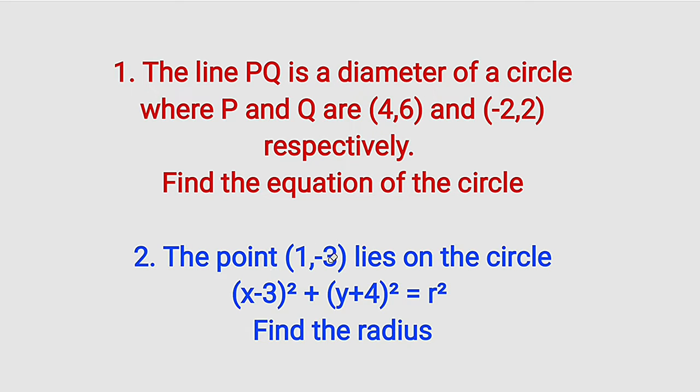While the second question reads, the point (1,-3) lies on the circle that has the equation (x-3)² + (y+4)² = r². In this case, we are looking for the radius of that circle.